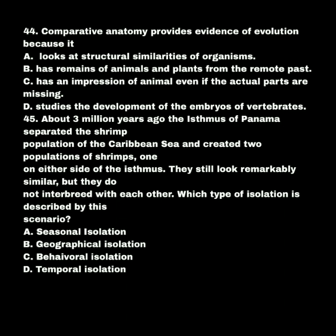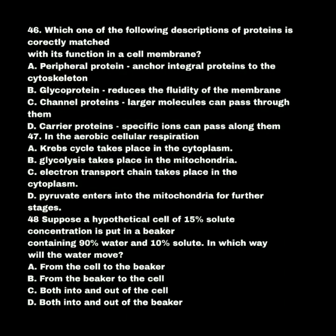About 3 million years ago, the isthmus of Panama separated the shrimp population of the Caribbean Sea and created two populations of shrimps on either side. They still look remarkably similar but they do not interbreed with each other. Which type of isolation is described? A. Seasonal isolation. B. Geographical isolation. C. Behavioral isolation. D. Temporal isolation. The answer is B: geographical isolation.